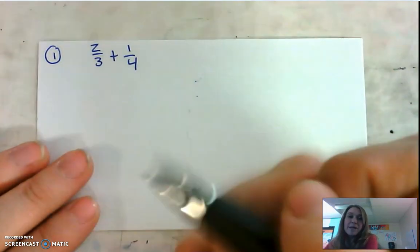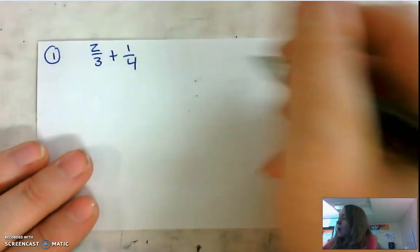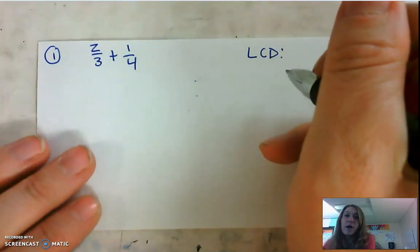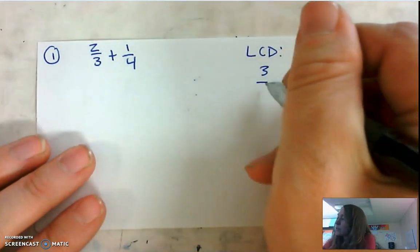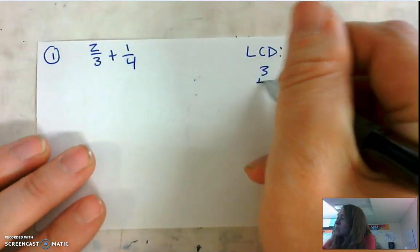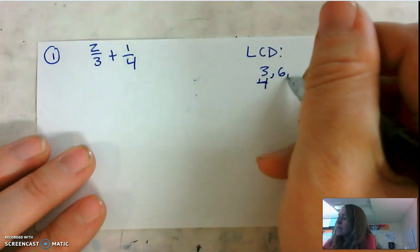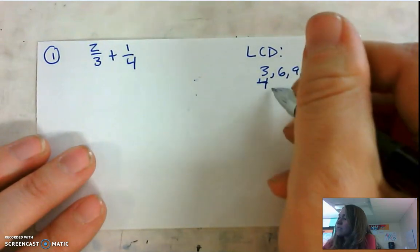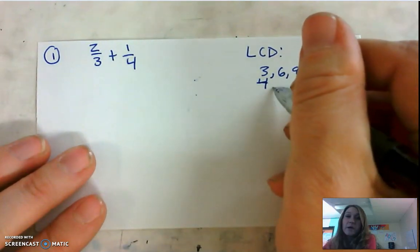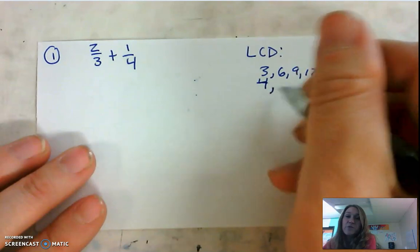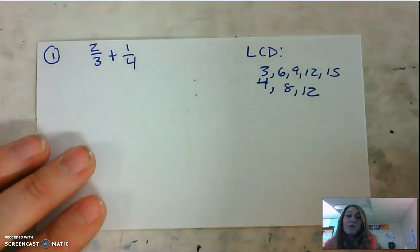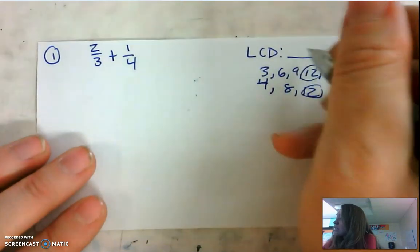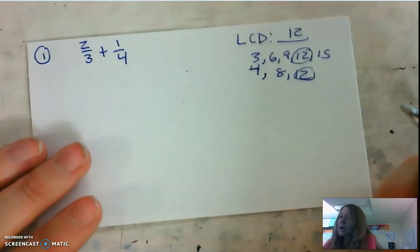For problem number 1, it is an addition problem, which means we need to find the LCD. We're looking for the LCD between 3 and 4, so we're going to list the multiples: 3, 6, 9, 12, 15. And then we're going to find the multiples of 4: 4, 8, 12 — stop. We found our LCD, our least common denominator, and it's 12.